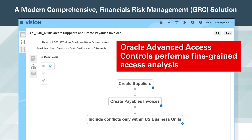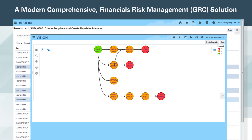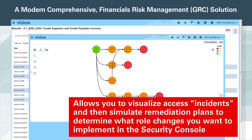Oracle Advanced Access Controls performs fine-grained access analysis that is further nuanced by access conditions such as users within the same business unit, same country, and same department. A key part of Advanced Access Controls is that it allows you to visualize access incidents and then simulate remediation plans to determine what role changes you want to implement in the security console.